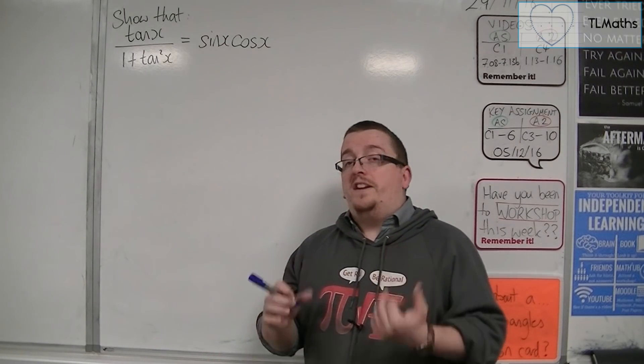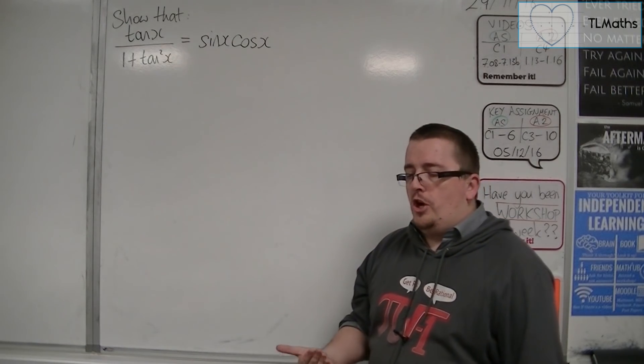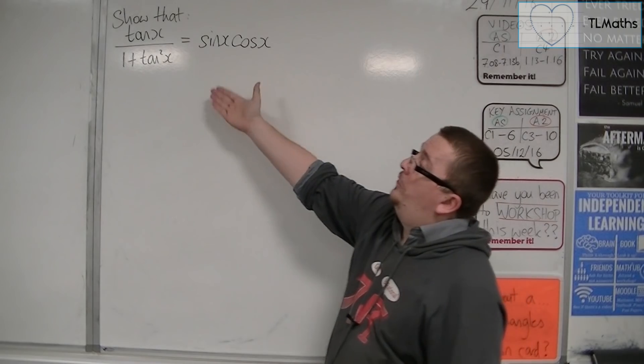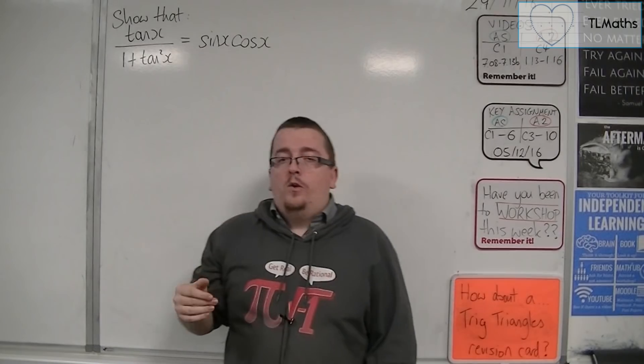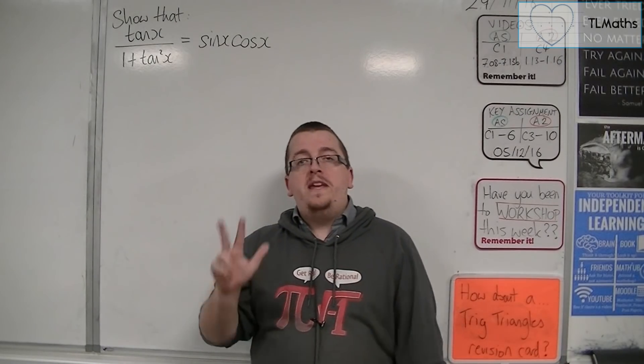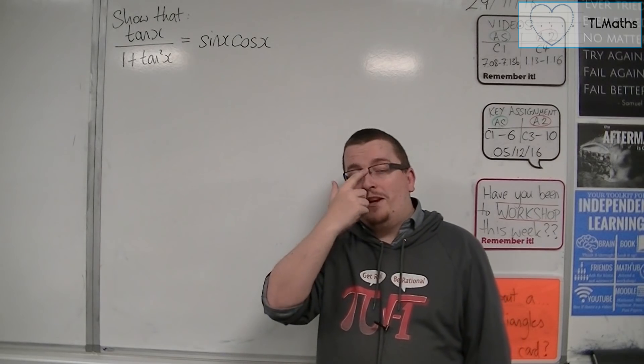So, we're going to need to have the identities at the ready. Now, how do you show, for example, that tan x over 1 plus tan squared is equal to sine x cos x? Well, you've actually got three ways of doing this, of proving a trigonometric identity.